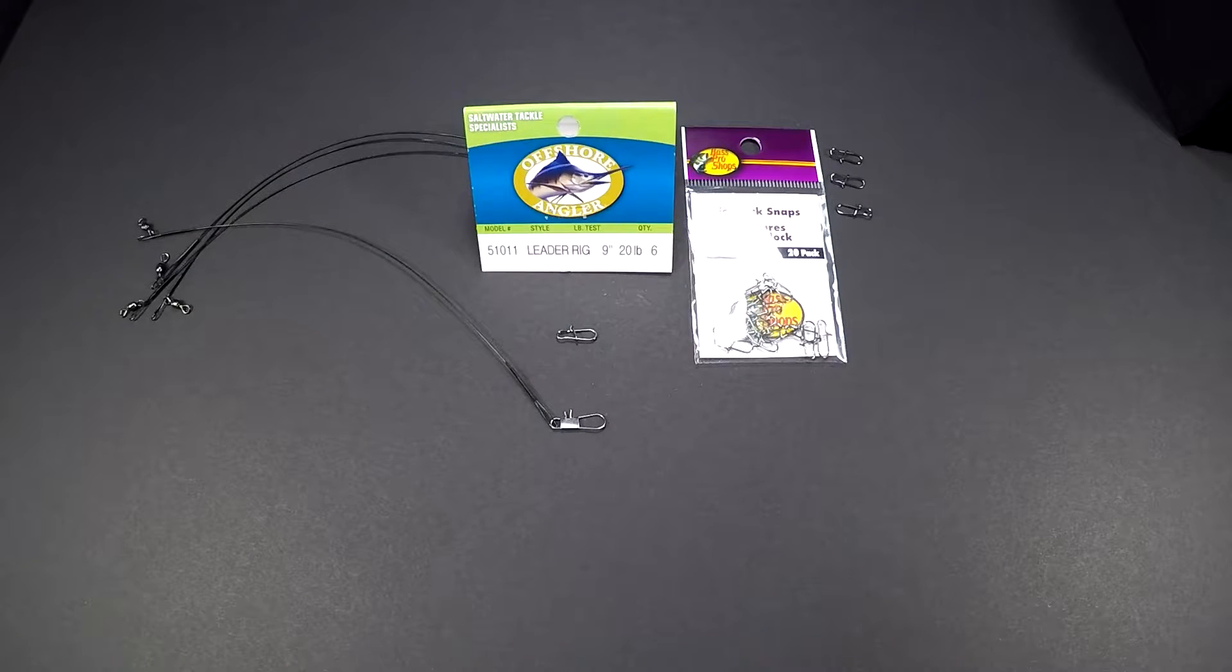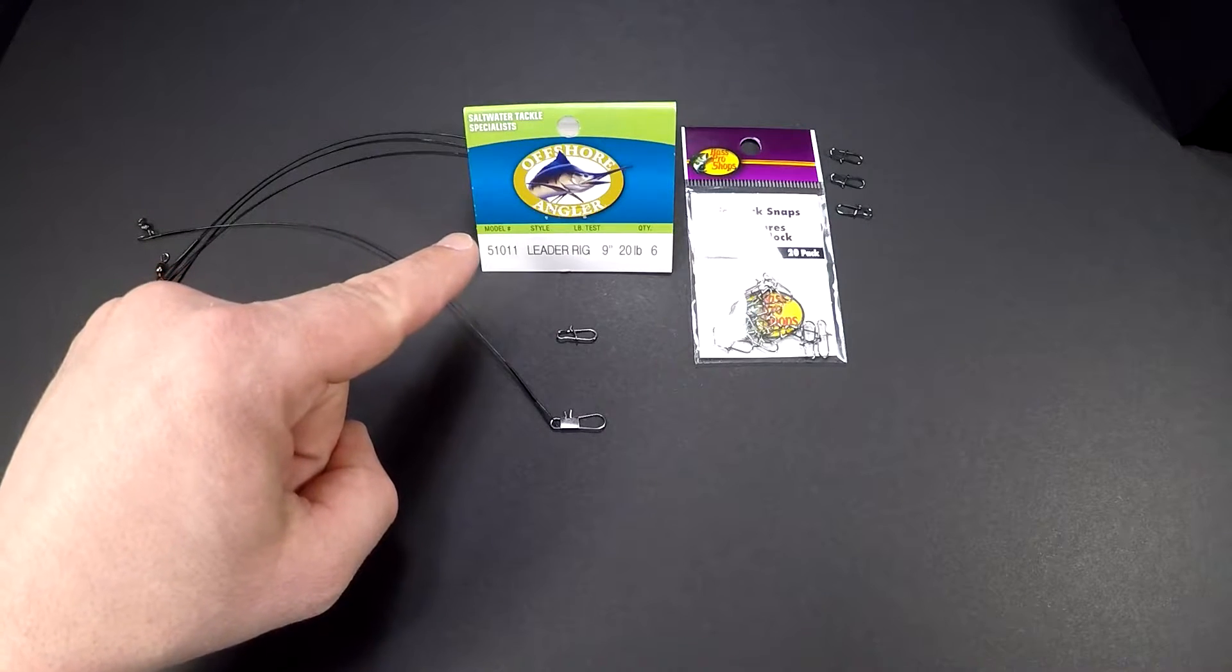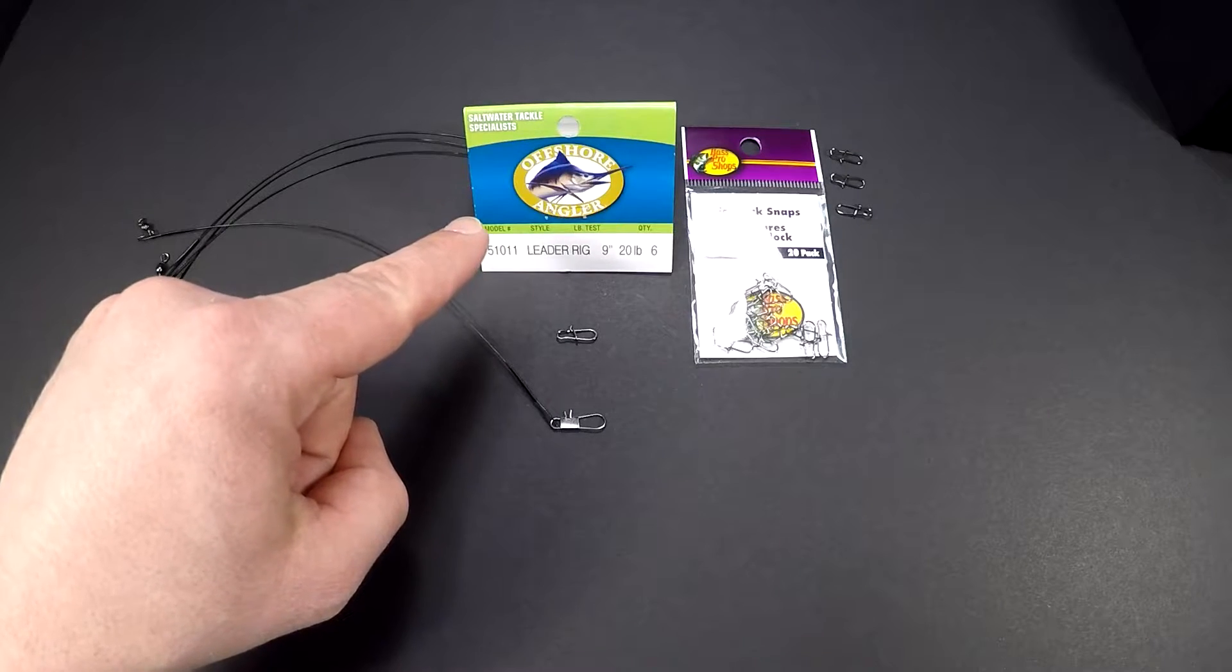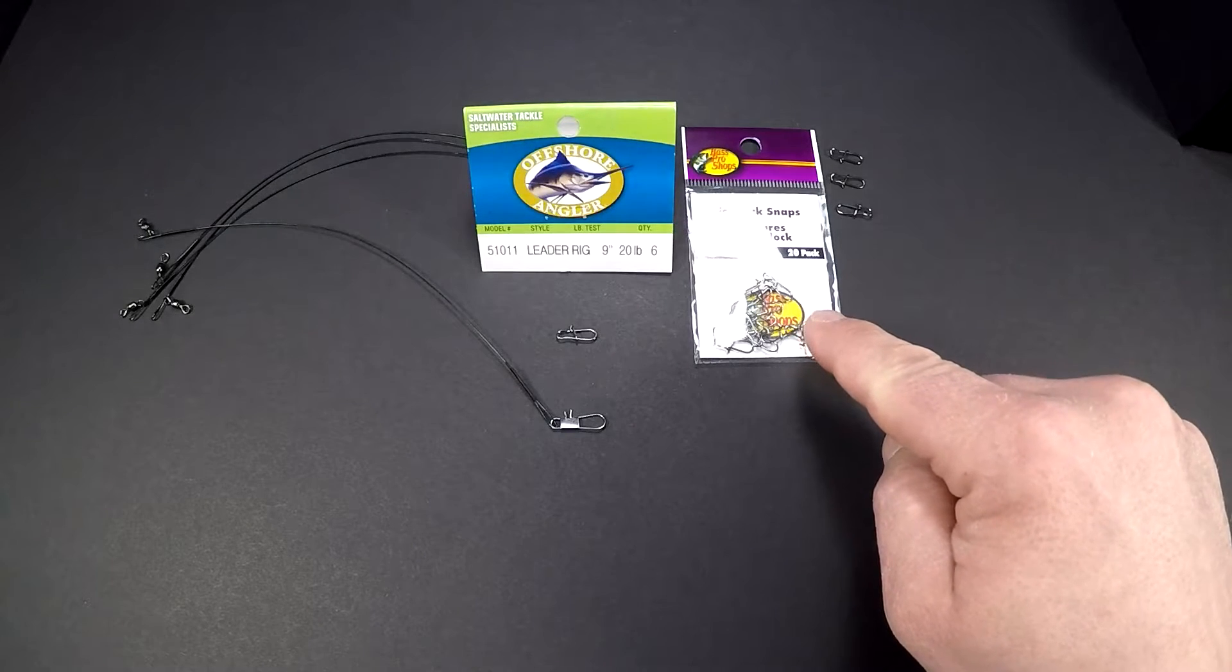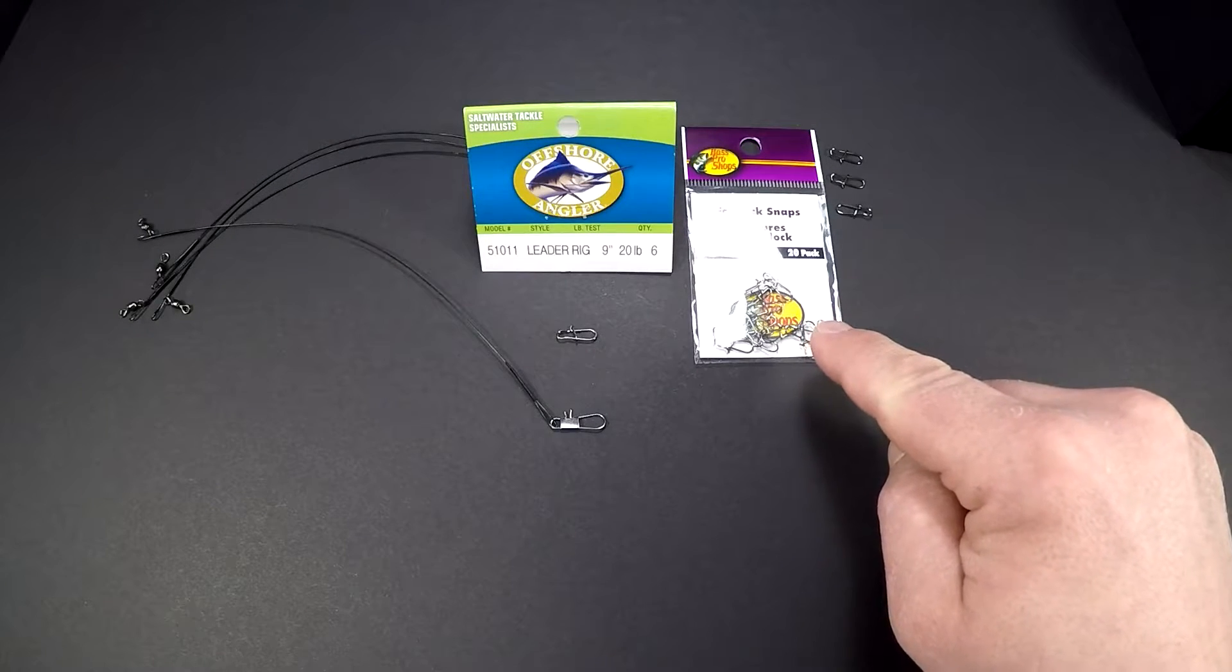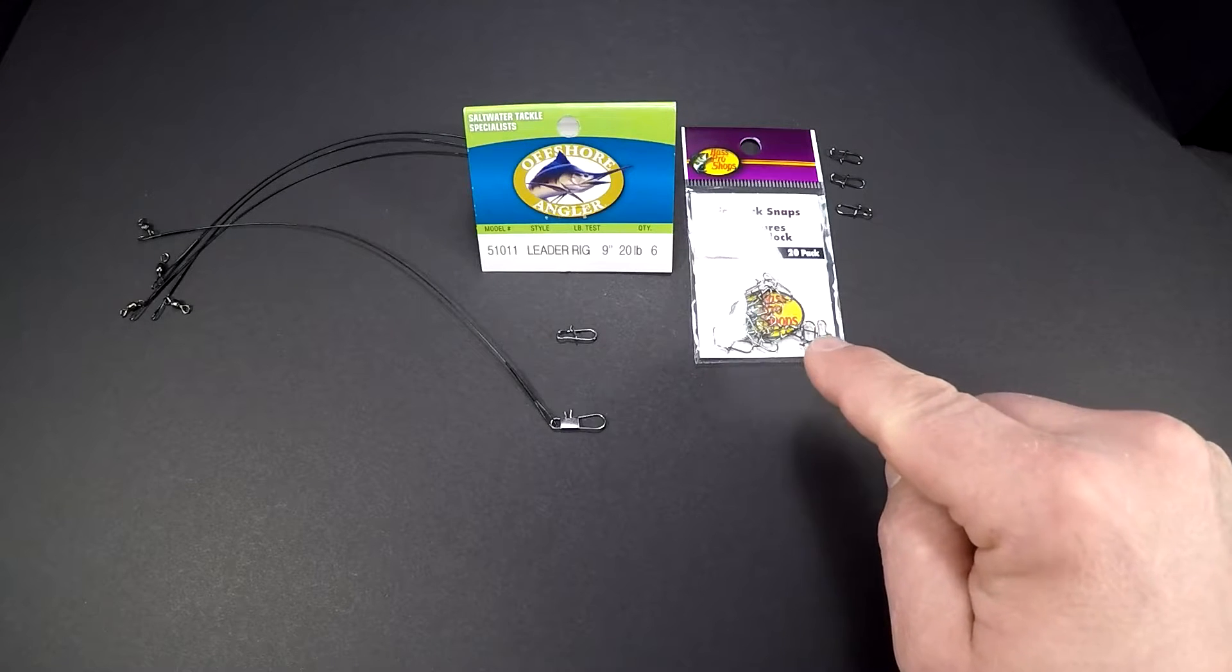Here are the things that you'll need to do this. You'll need steel leaders, this is the brand I buy, I usually get it from Bass Pro Shops. You'll need your fast lock snaps like this. I got a size number one, or you can get a size number two, that's personal preference.